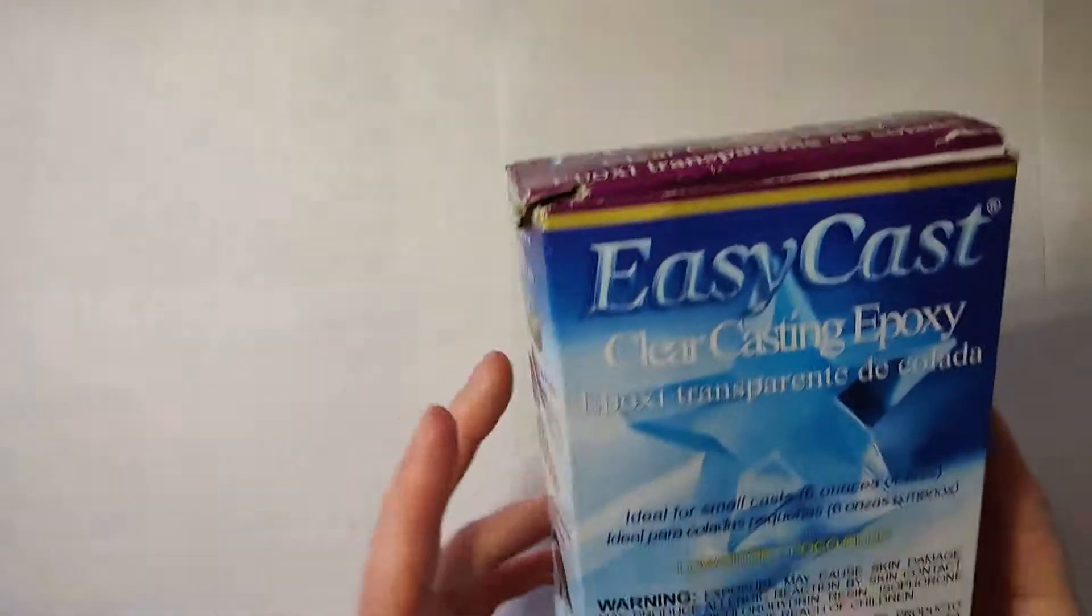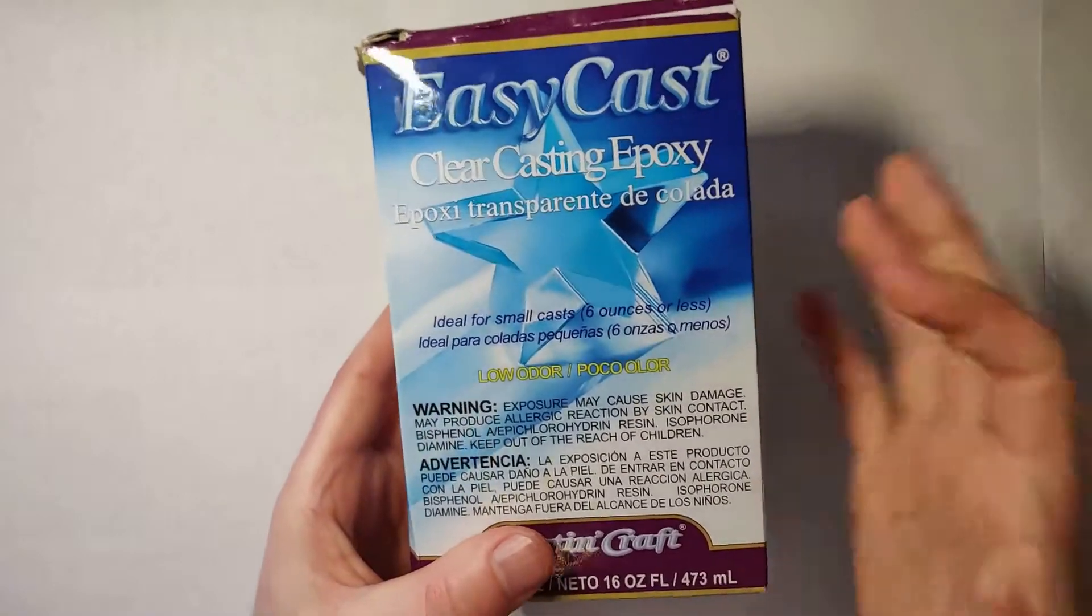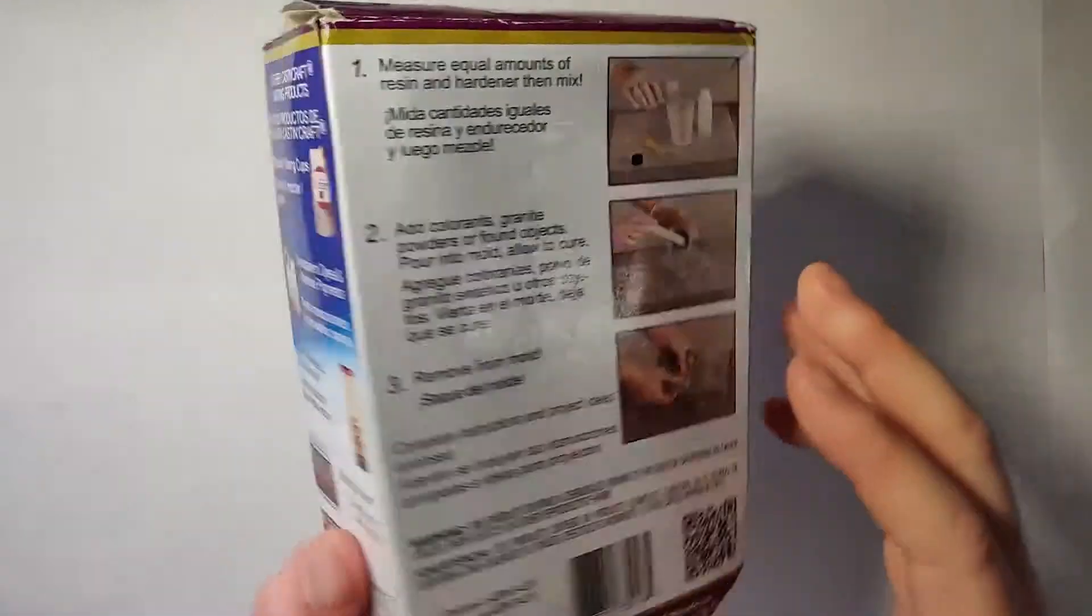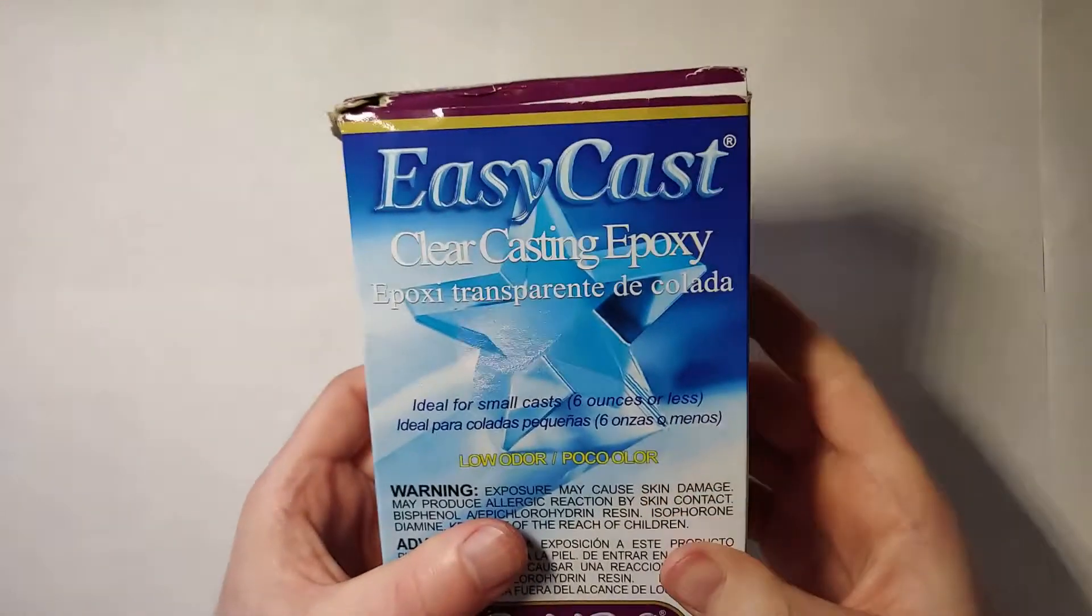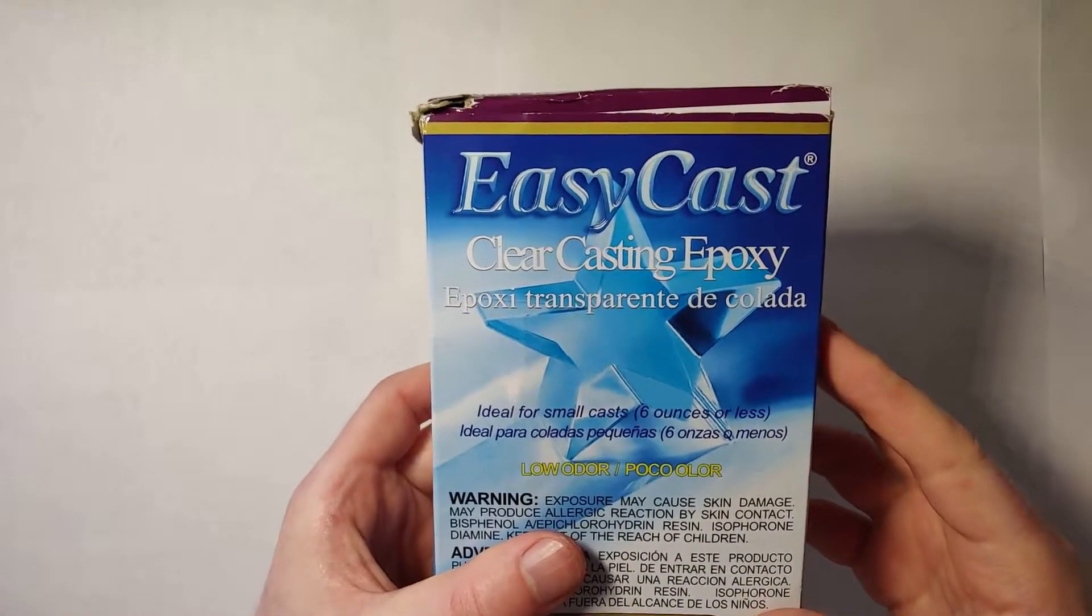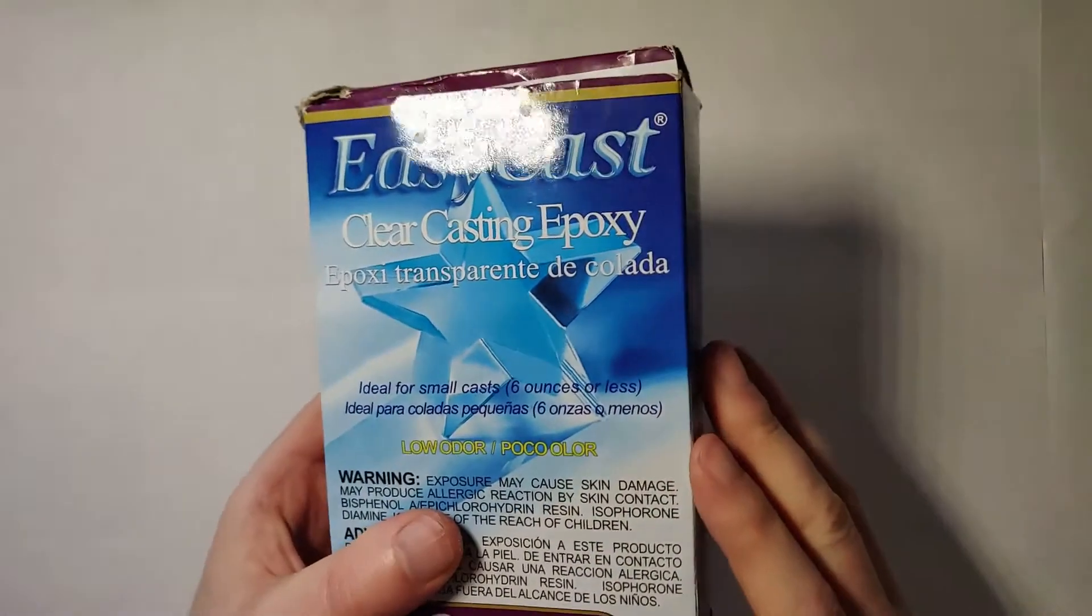So normally, if you're doing some kind of potting, you'd use something like this epoxy clear resin. So it's two-part, you mix an A and B, and it takes about 24 hours to 72 hours, depending on the type, to harden.